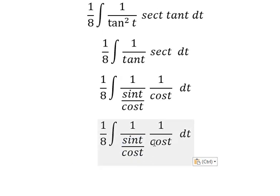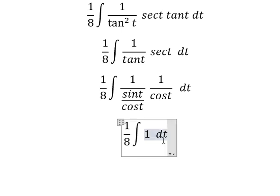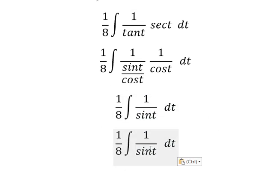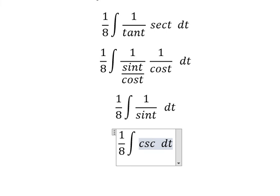Now, we need to simplify cosine t in the numerator and denominator. This one we have cosecant of t.